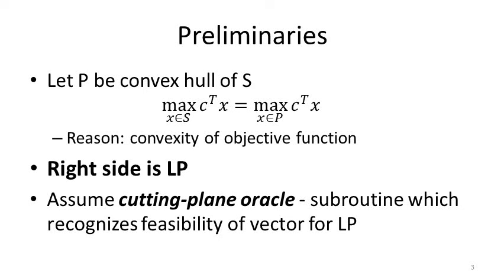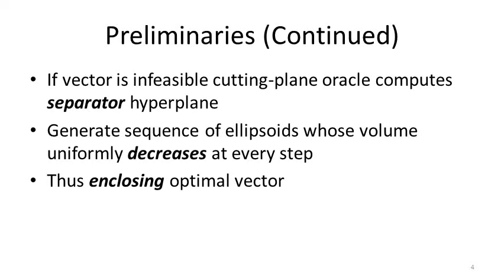The ellipsoid method assumes a feasibility oracle, which I'll refer to as a cutting plane oracle — a procedure that recognizes feasibility of candidate solutions for the LP. If a vector is feasible, the procedure tells us so. If it's not, it constructs what we call a separator hyperplane: any plane that stands between the input vector and the feasible region of the problem.